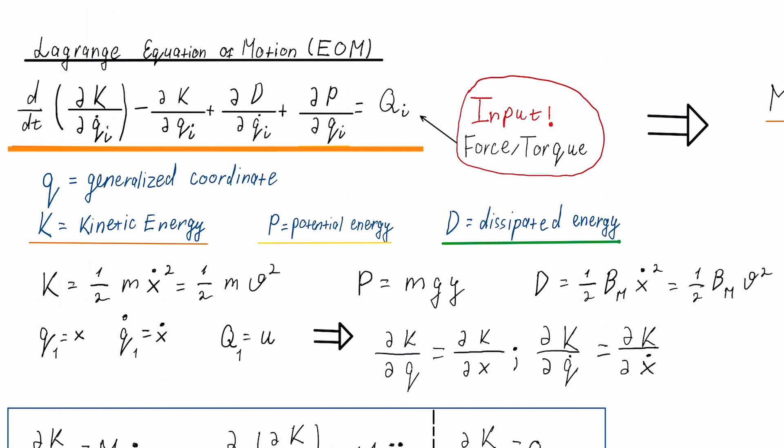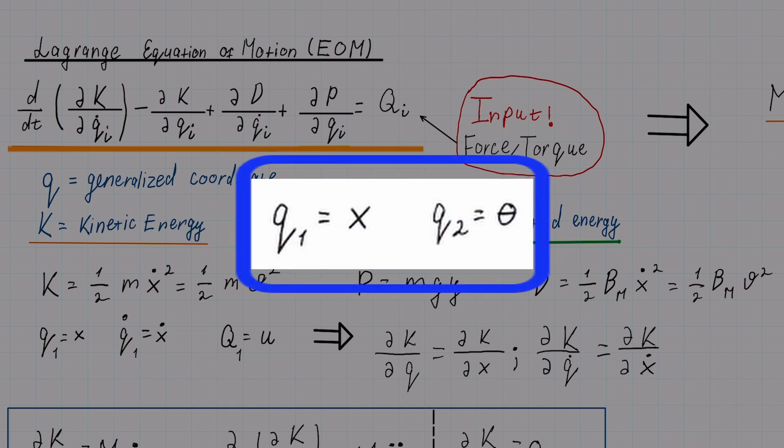Tracking the energies of the system, we can understand the transfer of kinetic energy to potential energy and what loss occurs during that transfer. The Lagrange equation is dependent on kinetic energy, potential energy, and dissipated energy — the energy loss due to friction or other disturbances. A good rule of thumb is that each independent motion should get a Lagrange equation. In an inverted pendulum, the cart can roll left and right (that is one), and the pendulum arm can rotate clockwise and counterclockwise (that is two). Therefore, we will have two Lagrange equations.